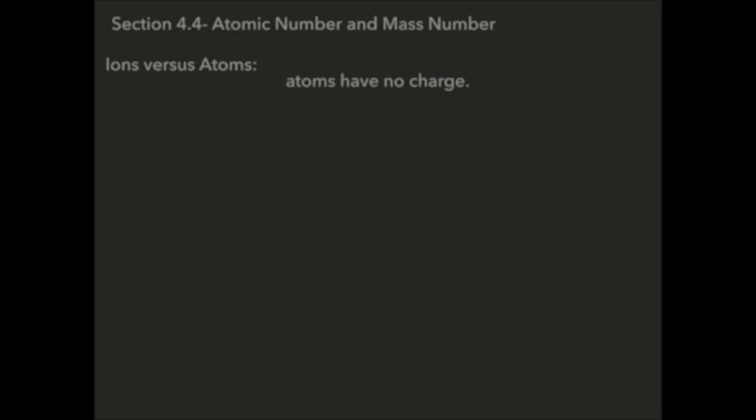Now atoms are simply particles that have no charge. So when you look at the periodic table all of those elements are atoms. When you add electrons or you get rid of electrons that's when you have an ion.